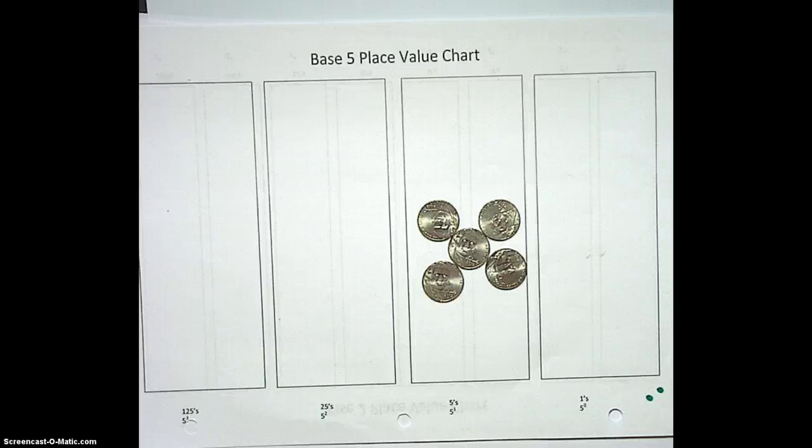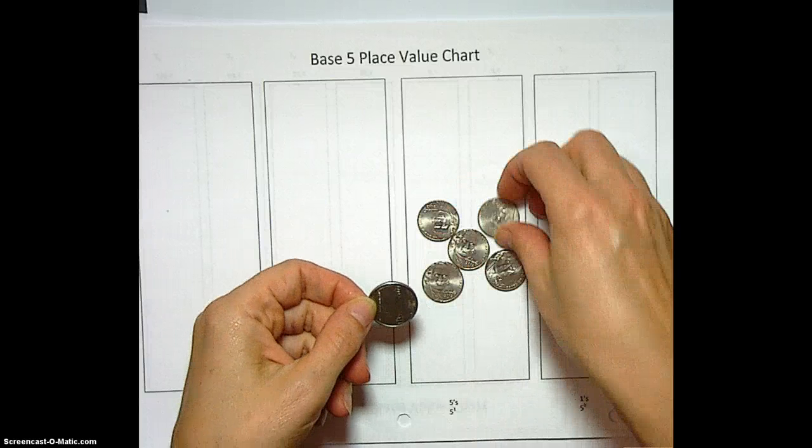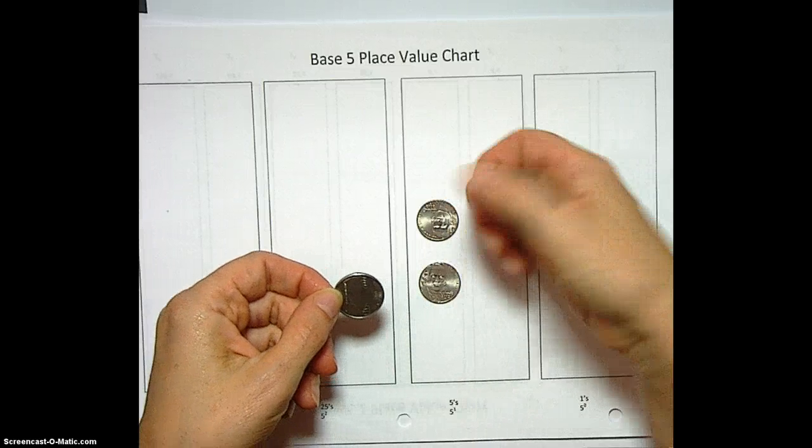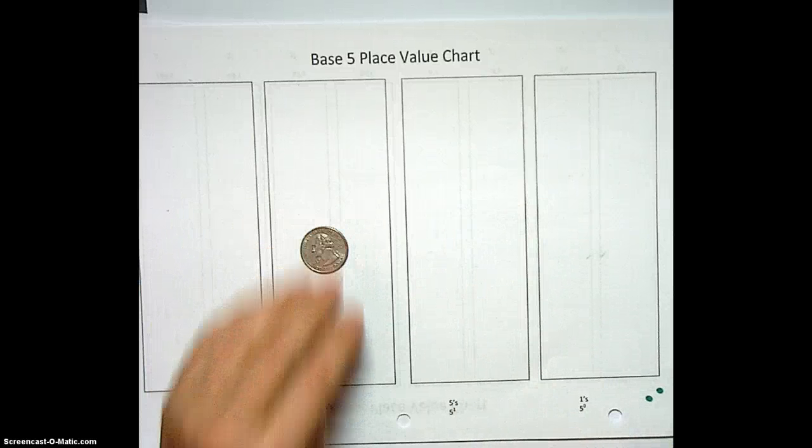Well, with the pennies, we exchanged. Right, we took 5 pennies and traded them in for a nickel. So what are we going to do with the 5 nickels? I feel like we should trade them again for a quarter. Yep. So we can exchange these 5 nickels. There's a game called Banker that kids play that helps them with this for that quarter.